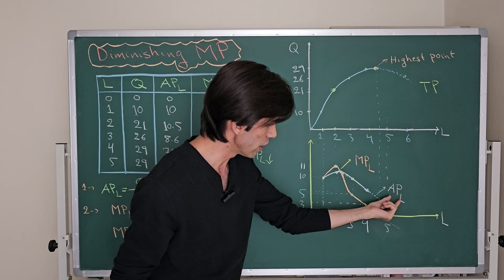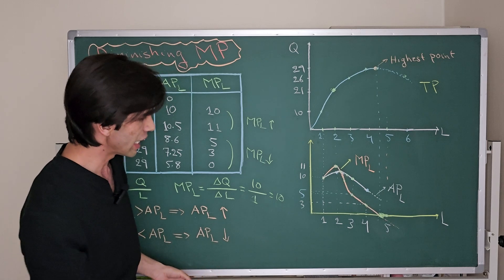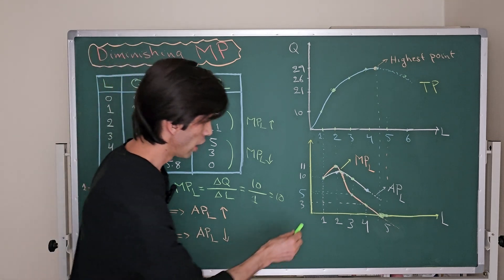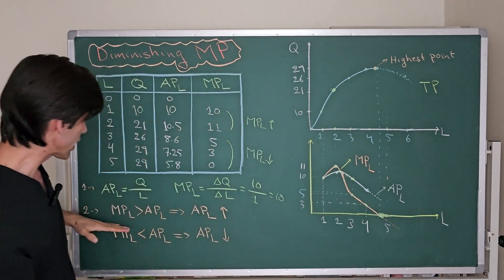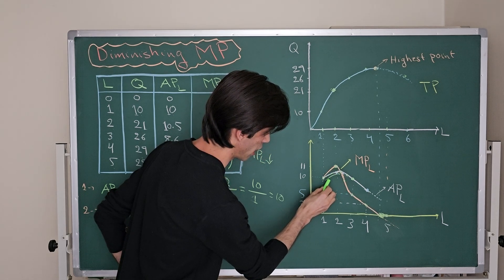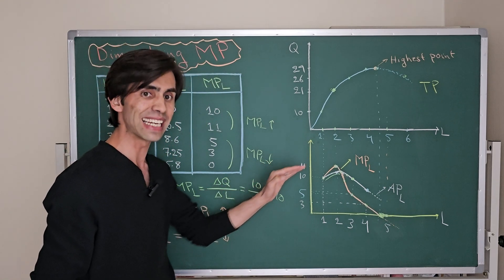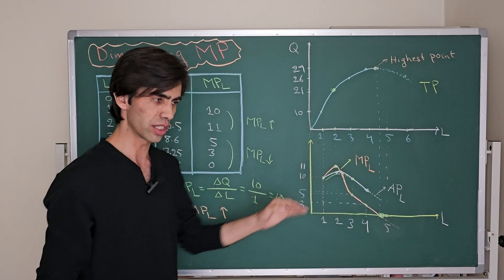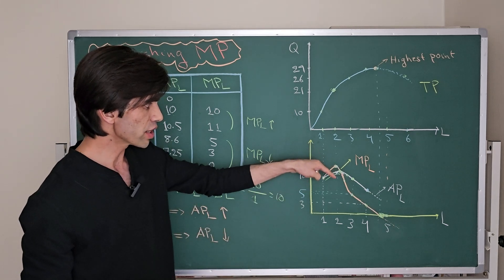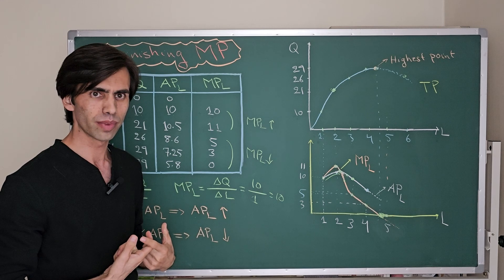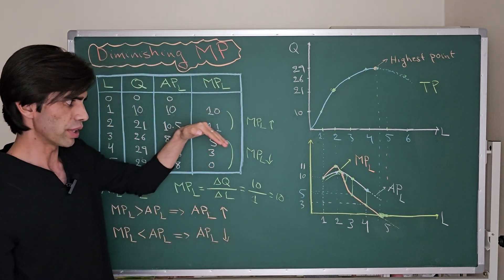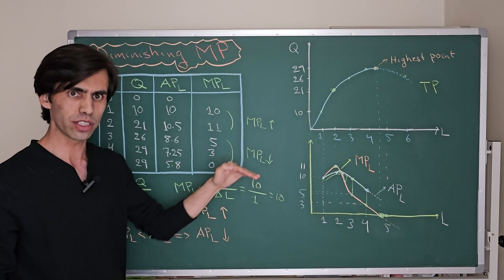Now we draw the curve of average product of labor, plotting it against the quantity of labor. When the marginal product of labor is greater than the average product of labor, the average product of labor is increasing. When the marginal product of labor is less than the average product of labor, the average product of labor is declining. At the highest point of the average product curve, marginal product of labor and average product of labor cross each other.